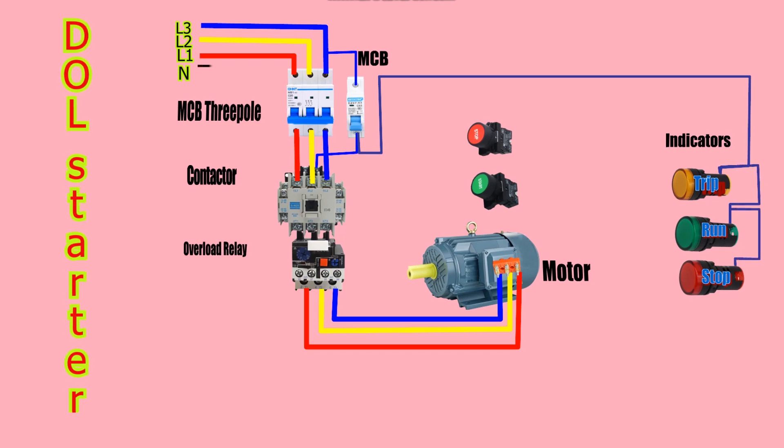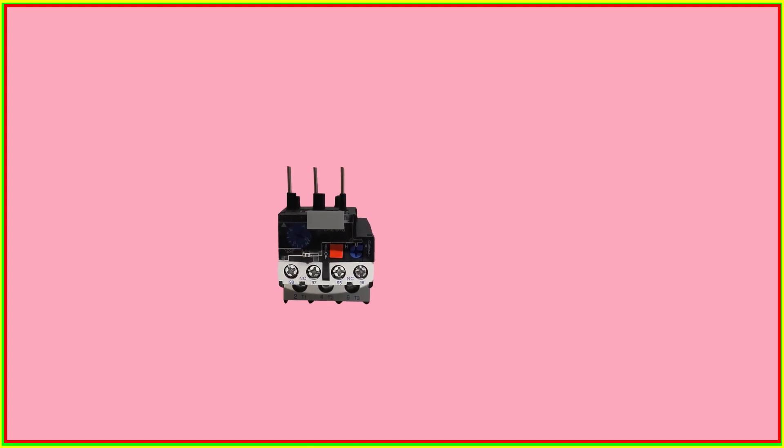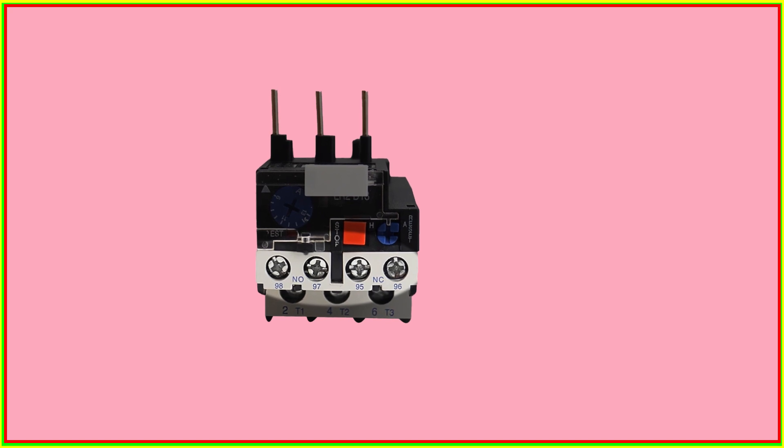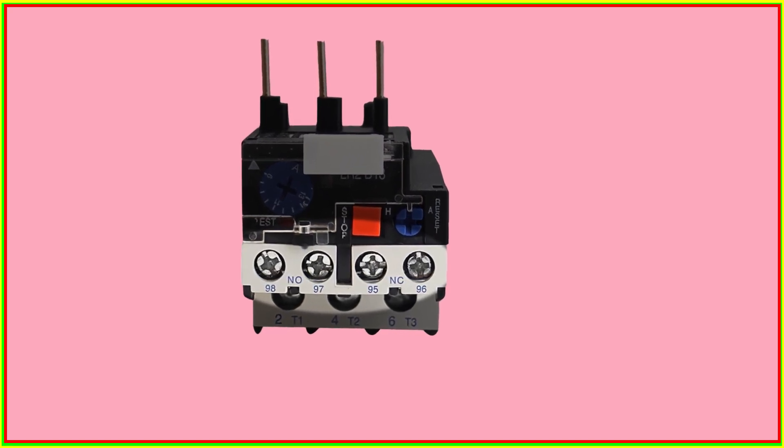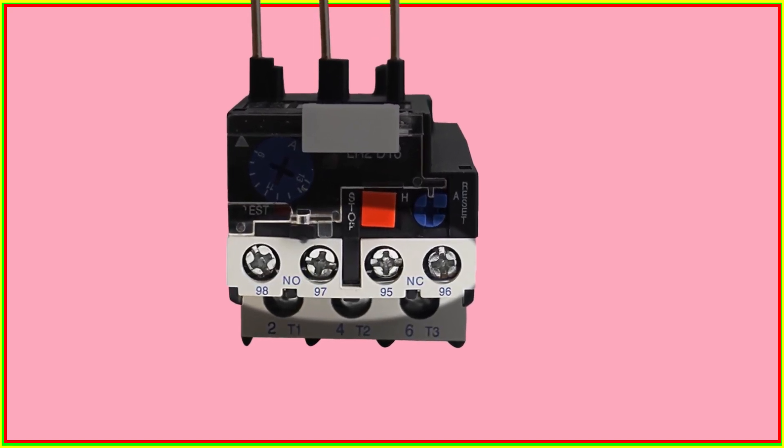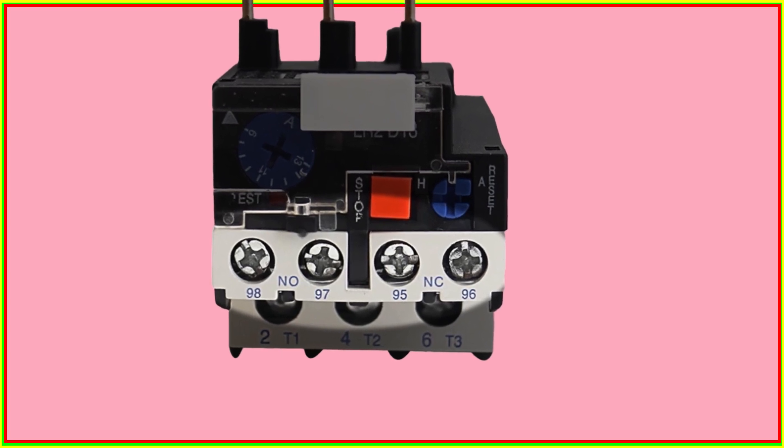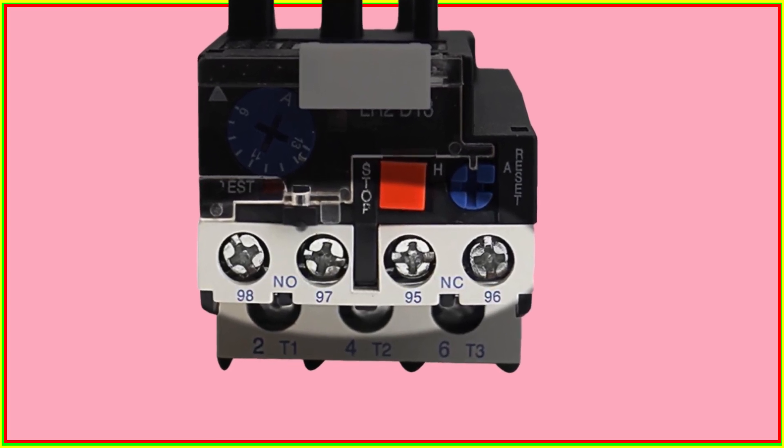In this DOL Starter, the neutral wire is connected to the normally open auxiliary contact of the magnetic contactor and looped with the normally closed contact of the magnetic contactor, the 98 and 95 contacts of the overload relay. The 98 is an auxiliary normally open contact of the overload relay with 97 contacts. 95 is the normally closed auxiliary contact of the overload relay with 96.